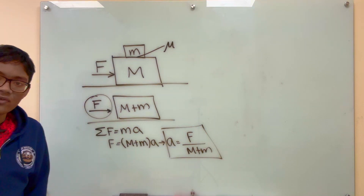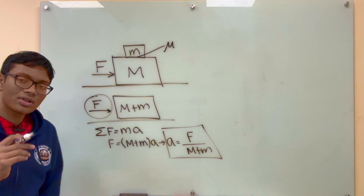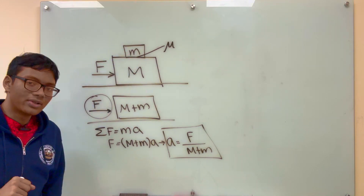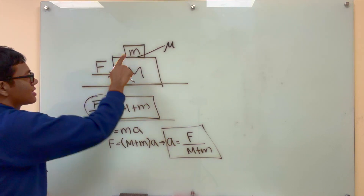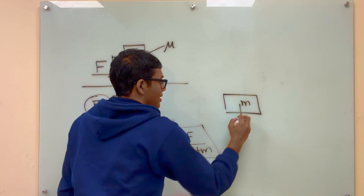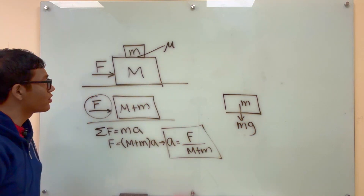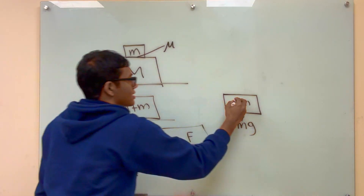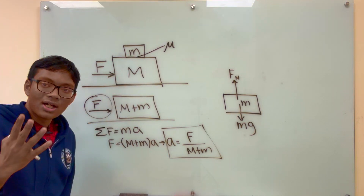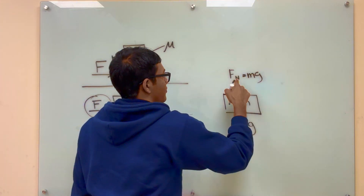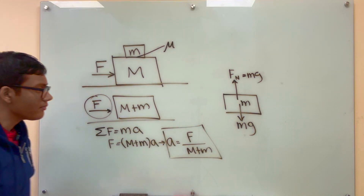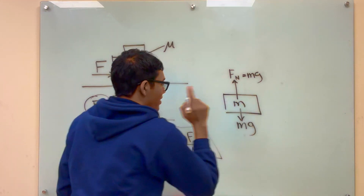But this is not what we're looking for. We're not just looking for the acceleration of the system — we're looking for the coefficient of friction between the two boxes so that the top box does not slip off the bottom one. Well, the next thing we can do is look at the top box and take a look at some of the forces acting on it. We've certainly got gravity, because any object in a gravitational field experiences a gravitational force. We also have a normal force pushing up, and it has to be equal in magnitude so that the top box is in static equilibrium vertically.